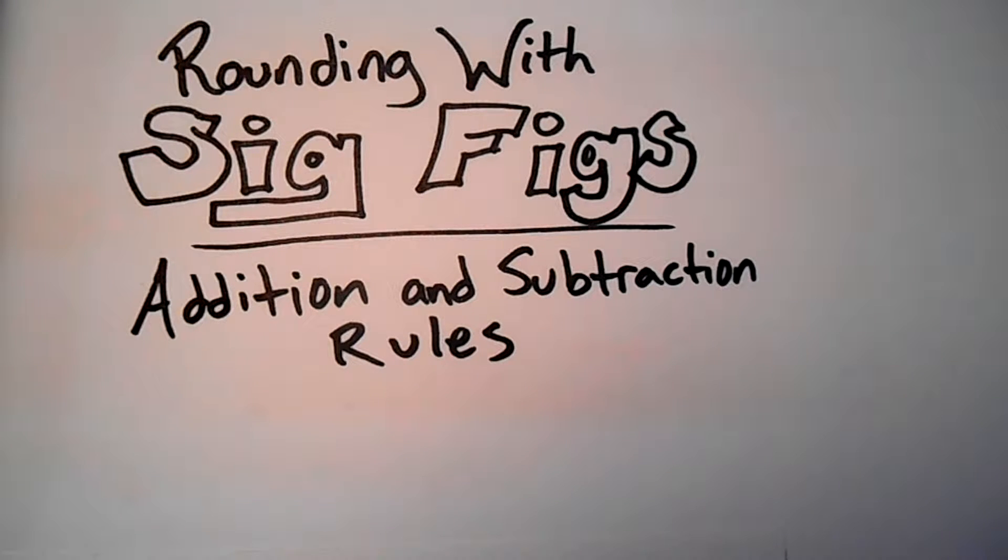Life's got problems, let's find solutions. This video is on how to round to the correct number of significant figures, keeping in mind the addition and subtraction rules. There are separate rules for using sig figs in calculations, depending upon if you're doing addition or subtraction versus multiplication and division. Two separate rules, and this is going to cover the addition subtraction rules.